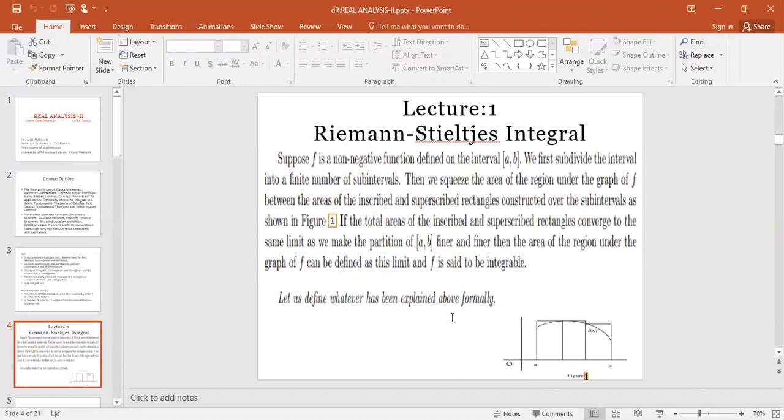Suppose f would be a non-negative function defined on the closed interval [a, b]. First, we divide the interval into sub-intervals, then we squeeze the area of the region under the graph between the area of the inscribed and superscribed rectangles considered over the sub-intervals as shown in this figure. If the total area of the inscribed and superscribed rectangles converges to the same limit as we make the partitioning of [a, b] finer, then we can claim that the function is integrable.